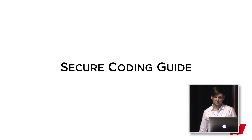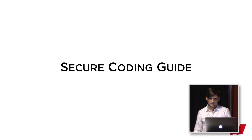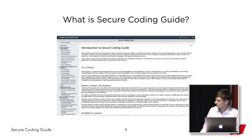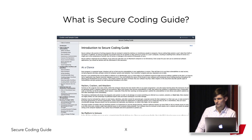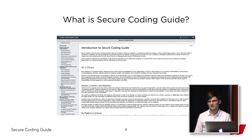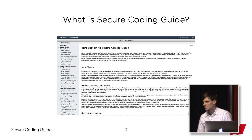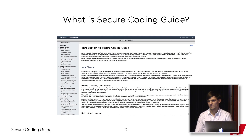Today I'm going to talk about the Secure Coding Guide, which is a document from Apple. It's just a normal document from Apple, like the Manual Memory Management Programming Guide or the Concurrency Programming Guide. The purpose of this document is to get acquainted with what kind of vulnerabilities we as iOS developers can face, and how to avoid those vulnerabilities.